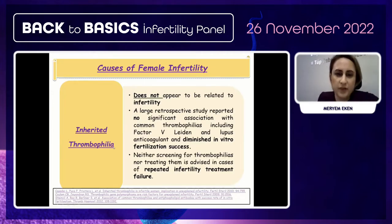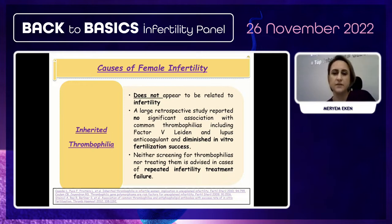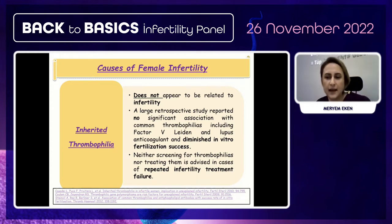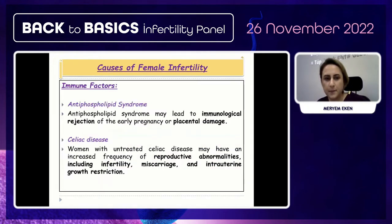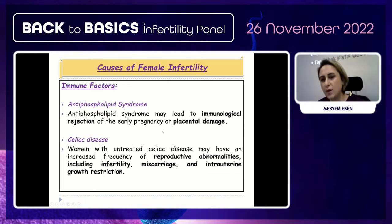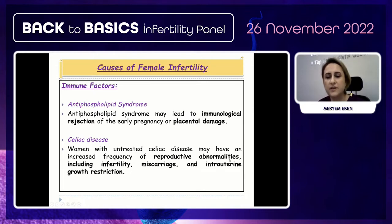Inherited thrombophilia does not appear to be related to infertility. A large prospective study reported non-significant association with common thrombophilias including Factor V Leiden and lupus anticoagulant and inhibition of IVF success. Some immune factors like antiphospholipid syndrome may lead to immunological rejection of early pregnancy or placental damage. Some inflammatory diseases like celiac disease may increase the frequency of reproductive abnormalities including infertility, miscarriage, and intrauterine growth restriction.